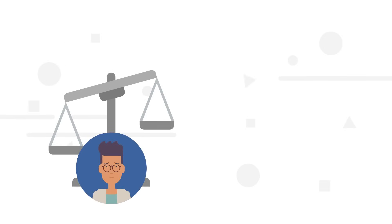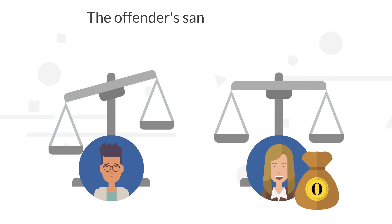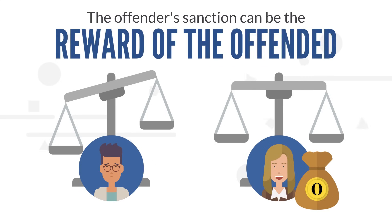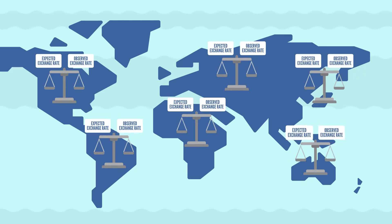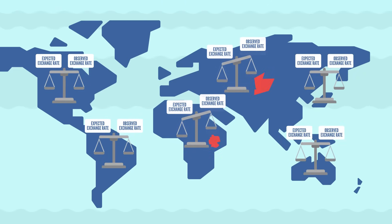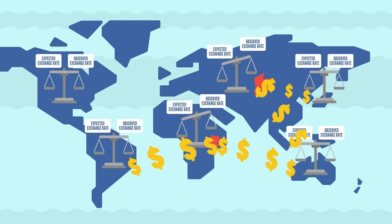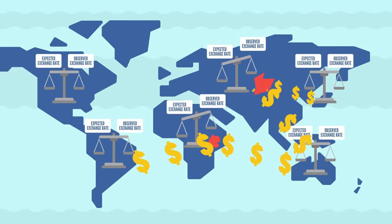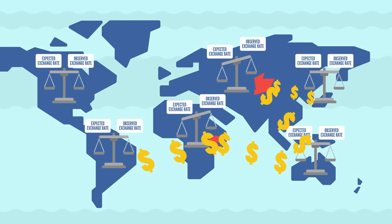Third, to help maintain the coins stable in the referential, we will use the very simple human principle that the offender's sanction can be the reward of the offended. In other words, if a currency becomes unstable in its O coin value, the blockchain will automatically trigger two sanctions for the offender. First, it will generate new coins equal to the value of the difference in volume and will distribute them in small amounts to randomly picked users whose place of birth's currency is stable.